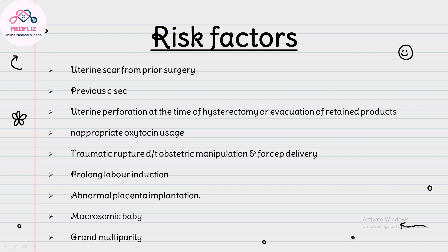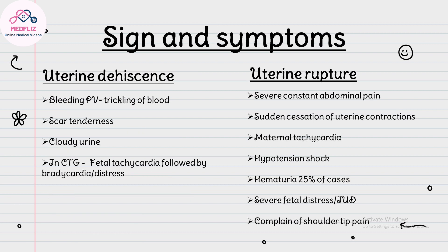Grand multiparity is also a risk factor. Clinical signs of uterine dehiscence include trickling of blood per vaginally, scar tenderness, cloudy urine, and fetal tachycardia followed by bradycardia on CTG. In uterine rupture, there is severe constant abdominal pain, sudden cessation of uterine contractions, and if contractions persist, abdominal pain continues. Other signs include maternal tachycardia, hypotension, shock, hematuria in 25% of cases, severe fetal distress or intrauterine death, and complaint of shoulder tip pain.